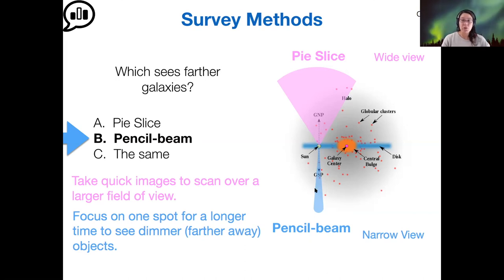For that reason, the pencil beam survey can see farther away simply because it has the chance to gather more light. Whereas if you're doing a pie slice survey, you take shorter time scale images of many locations, so it has a shorter redshift range but you're getting a wider area.